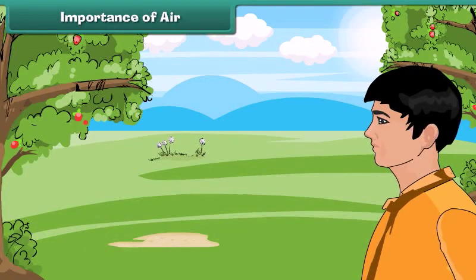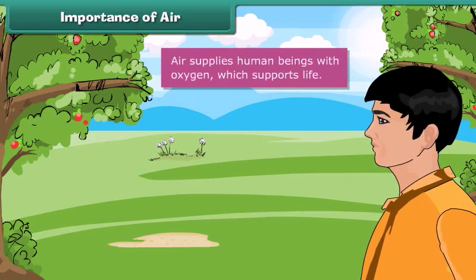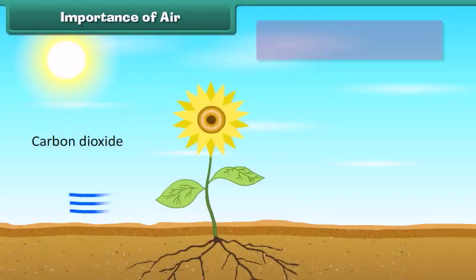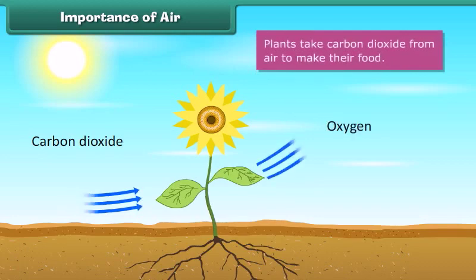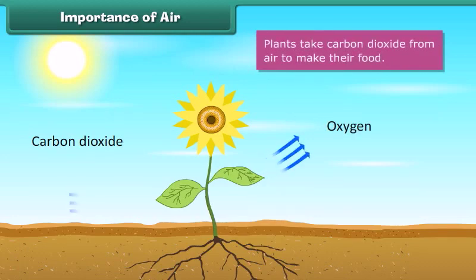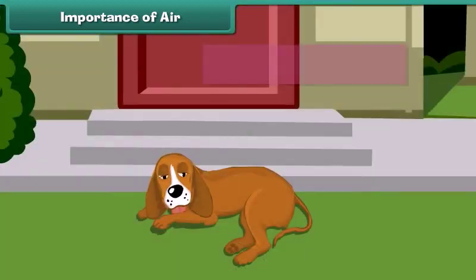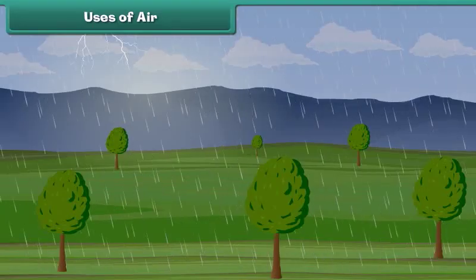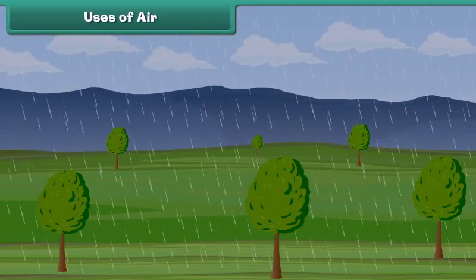Air supplies human beings with oxygen, which supports life. Plants take carbon dioxide from air to make their food. Animals also depend on the oxygen present in the air for survival.